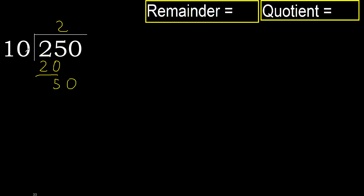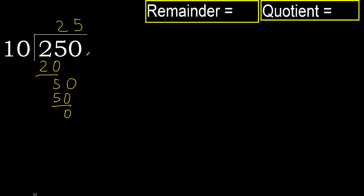50. Then 10 multiplied by 5 is 50. 50 is not greater. Subtract: 50 minus 50 is 0. Next.